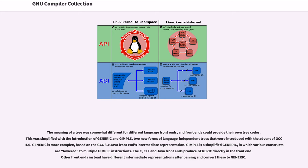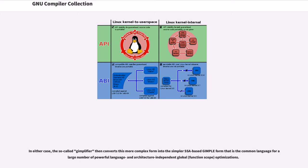Until recently, the tree representation of the program was not fully independent of the processor being targeted. The meaning of a tree was somewhat different for different language front-ends, and front-ends could provide their own tree codes. This was simplified with the introduction of Generic and GIMPL, two new forms of language-independent trees introduced with GCC 4.0. Generic is more complex, based on the GCC 3.x Java front-end's intermediate representation. GIMPL is a simplified Generic, in which various constructs are lowered to multiple GIMPL instructions. The C, C++, and Java front-ends produce Generic directly in the front-end.